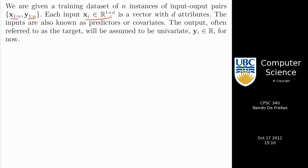The outputs are known as the targets, the labels, or the response variables. I will mostly use the terms features and labels. Here I'm going to assume that the labels are just real numbers. Later we'll deal with the case where they're binary things — like sex, male or female — but if we learn how to do the real-valued case first, that next case will be easy.